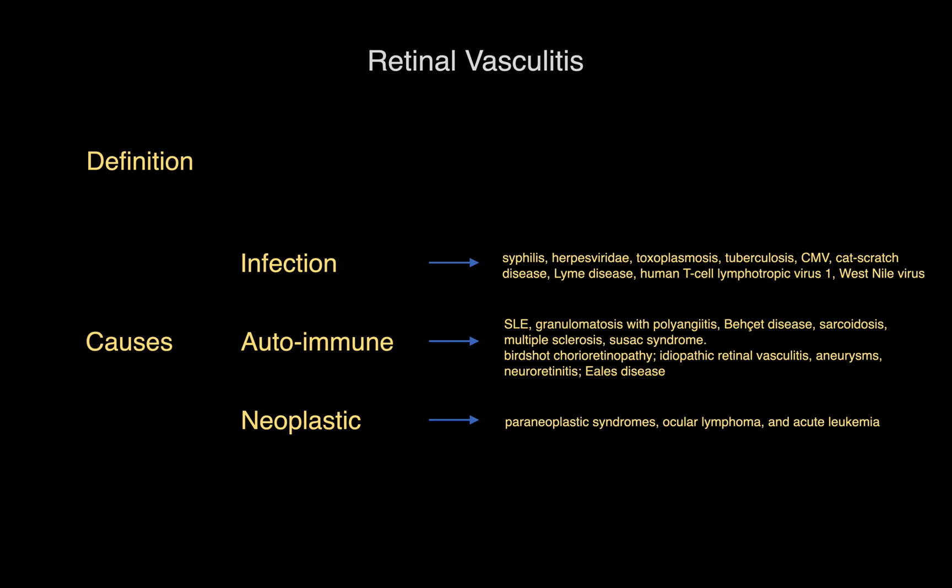In this video we are going to talk about the definition and causes of retinal vasculitis. Retinal vasculitis can be an isolated condition or a complication of local or systemic inflammatory disorders. It is characterized by inflammation of the retinal vasculature and is a sight-threatening condition associated with various infective, autoimmune, inflammatory, or neoplastic disorders.